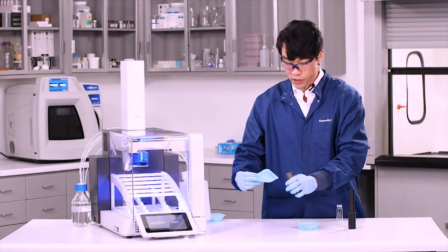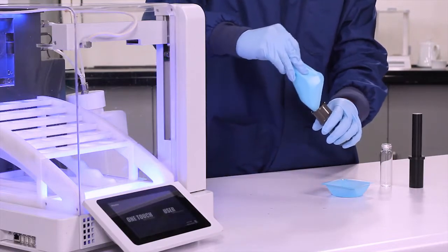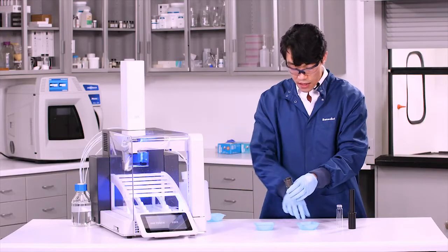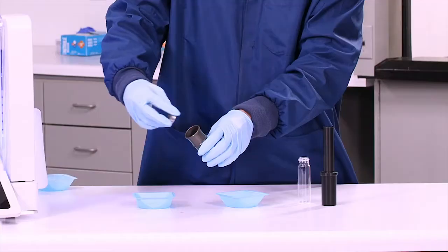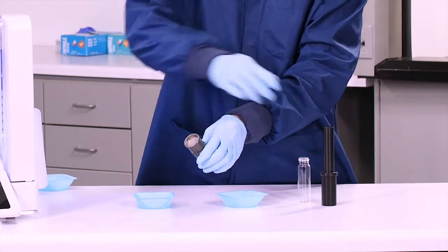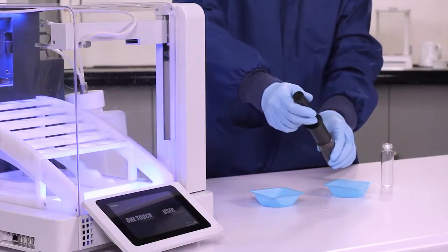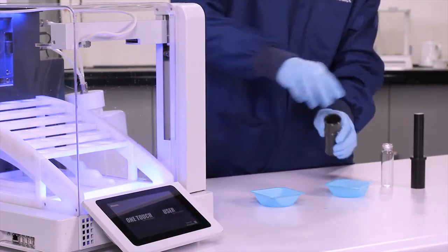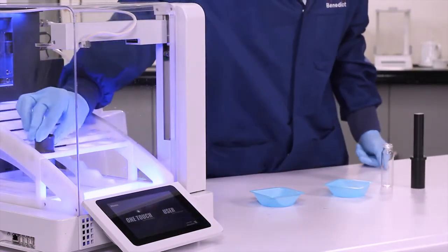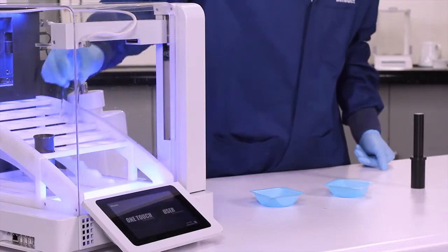Next thing we're going to do is we're going to pour our sample right into the Q-cup. Then we're going to insert a Q-screen, putting it into the opening, pressing down with the tool, and then inserting it into the Edge with the vial right beside it.